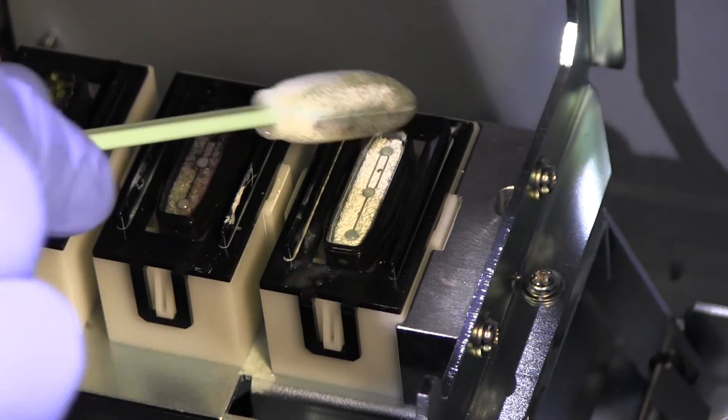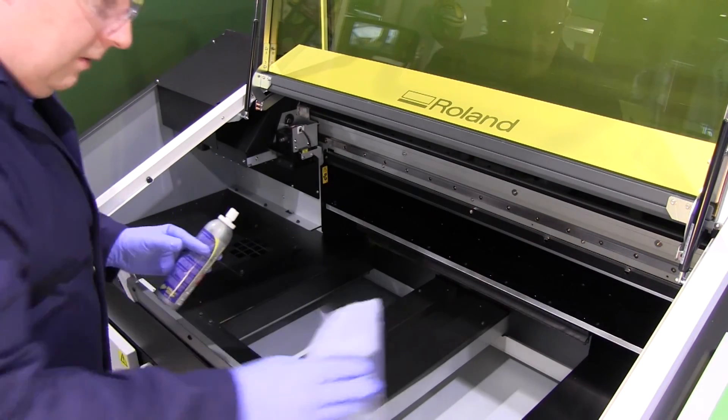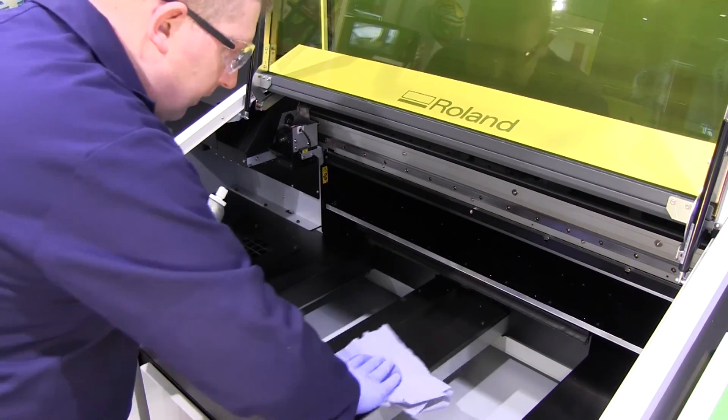Now you can clean any other parts of the machine. If you see ink on any of the other surfaces within the machine you can use the cleaning solution and swabs to wipe it away.